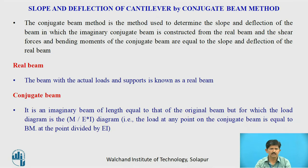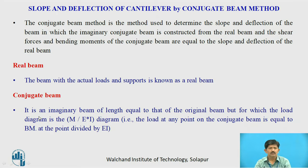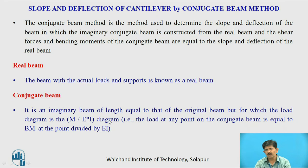So what is the real beam? The real beam is the actual beam which has actual loading and support conditions. The conjugate beam is an imaginary beam having a length equal to that of the original beam, but the loading is equal to the M/EI diagram.